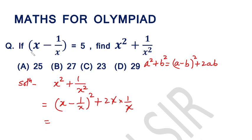Now put the value of x minus 1 over x in this expression. Then we will get 5 square plus 2. 5 square means 25, 25 plus 2 equal to 27.